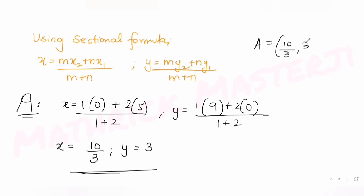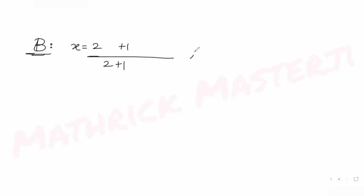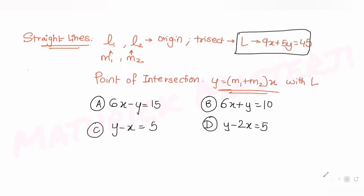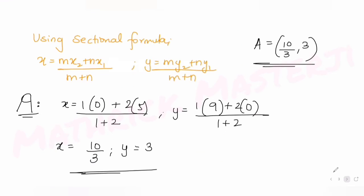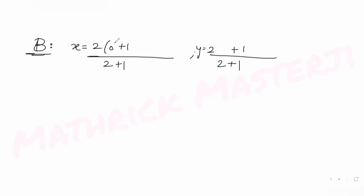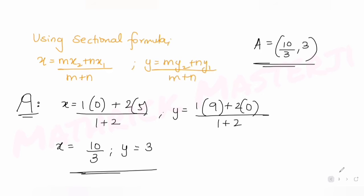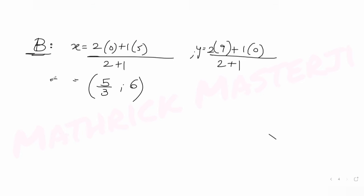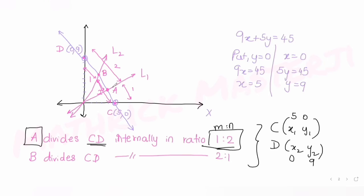For point B with ratio 2:1, using the same formula with x2 = 0, x1 = 5, y2 = 9, y1 = 0: x = 5/3 and y = 18/3 = 6. So the coordinates of B are (5/3, 6). We now have A = (10/3, 3) and B = (5/3, 6).